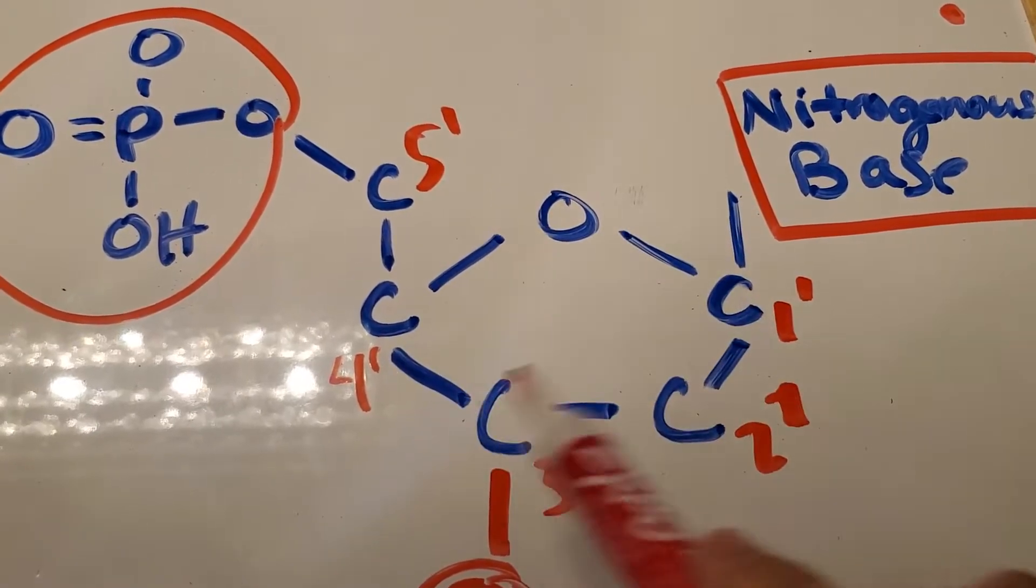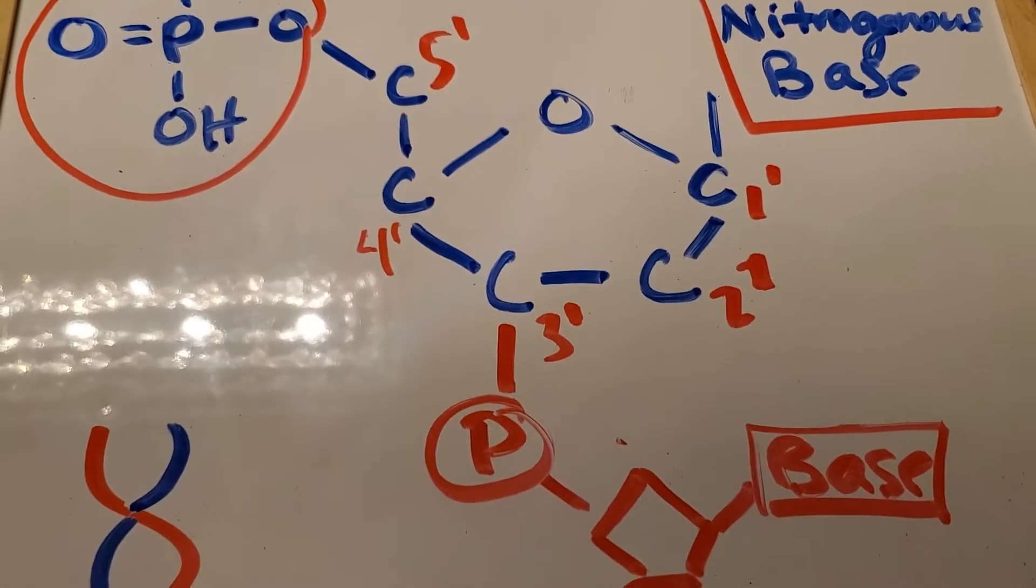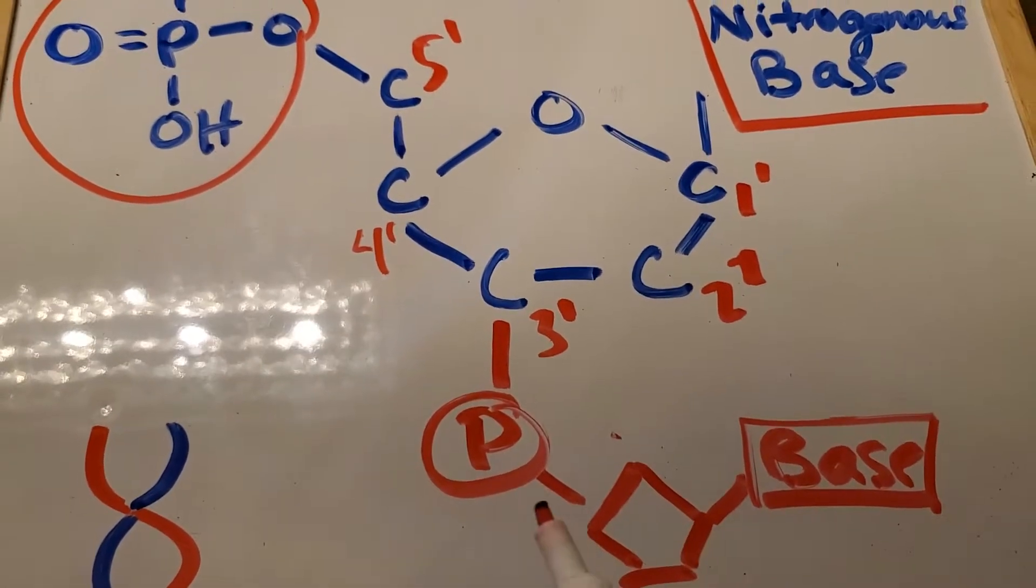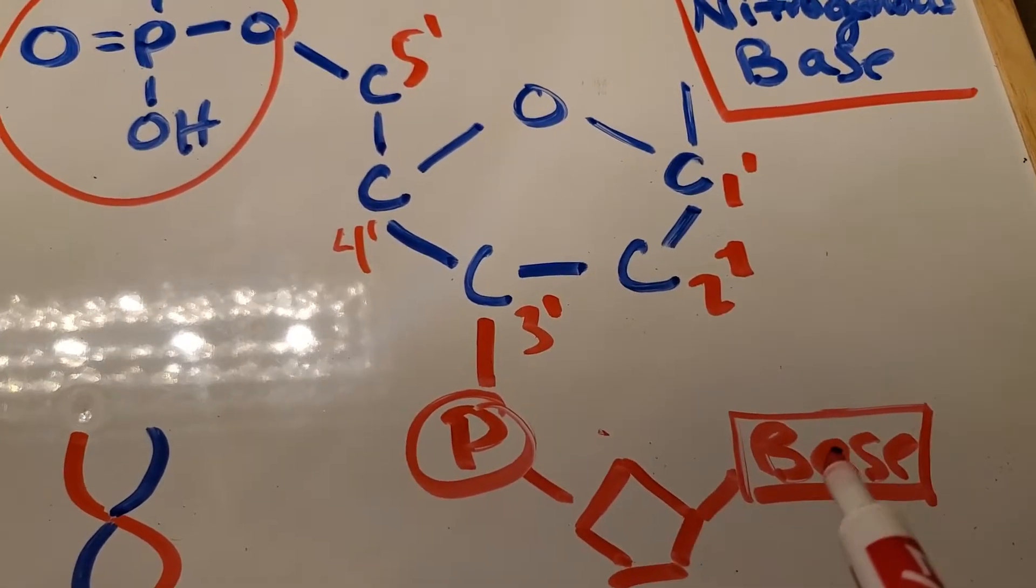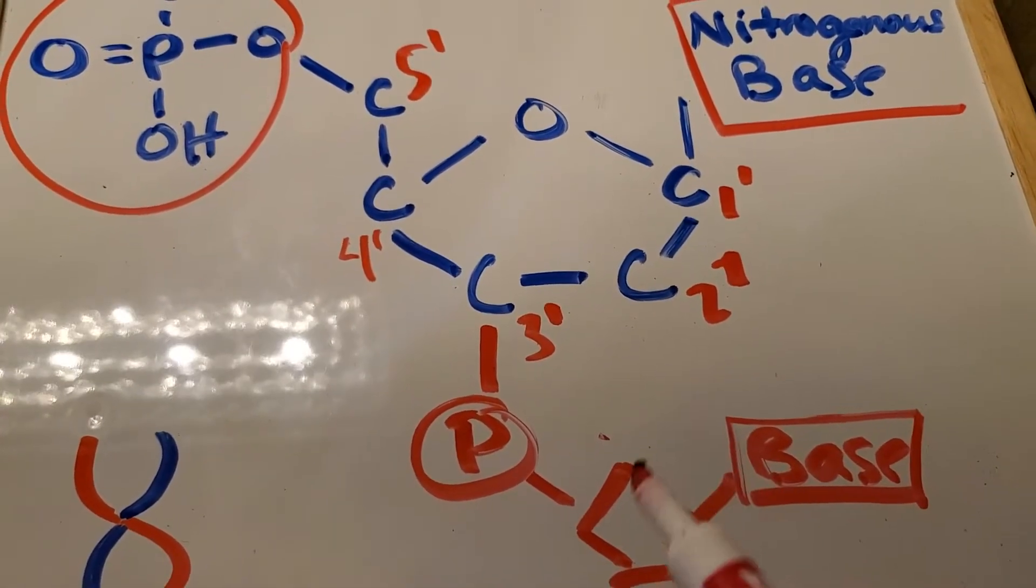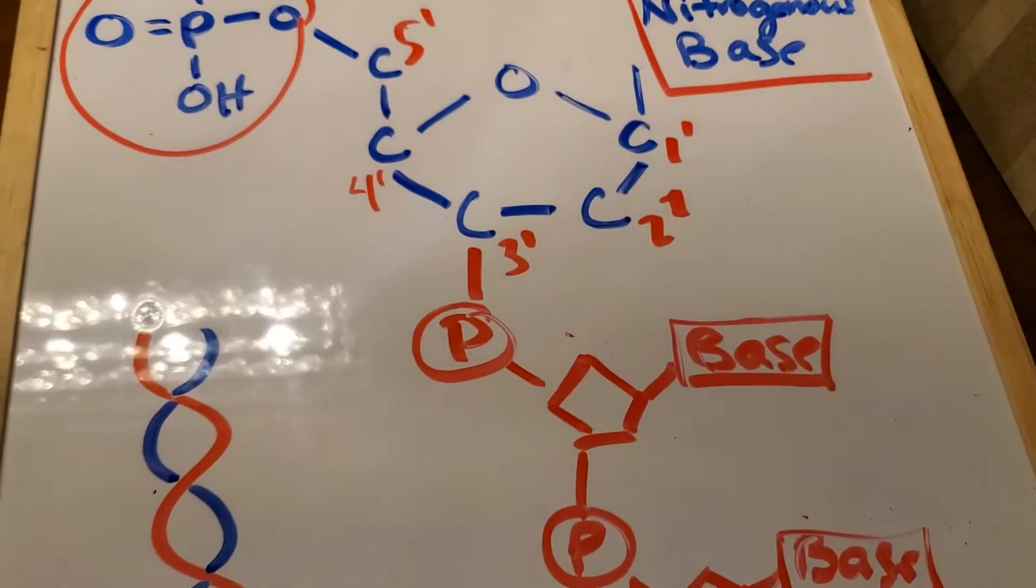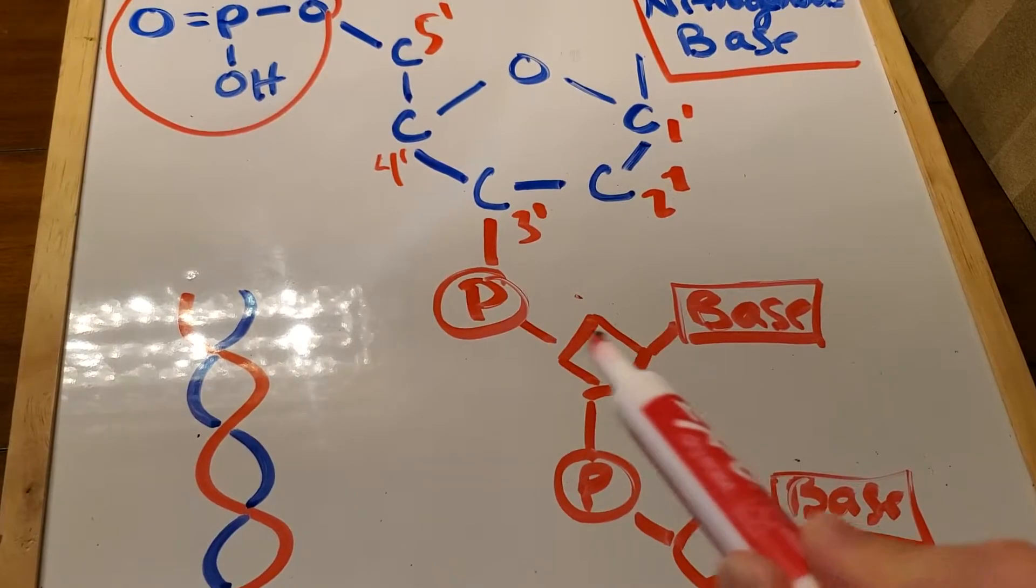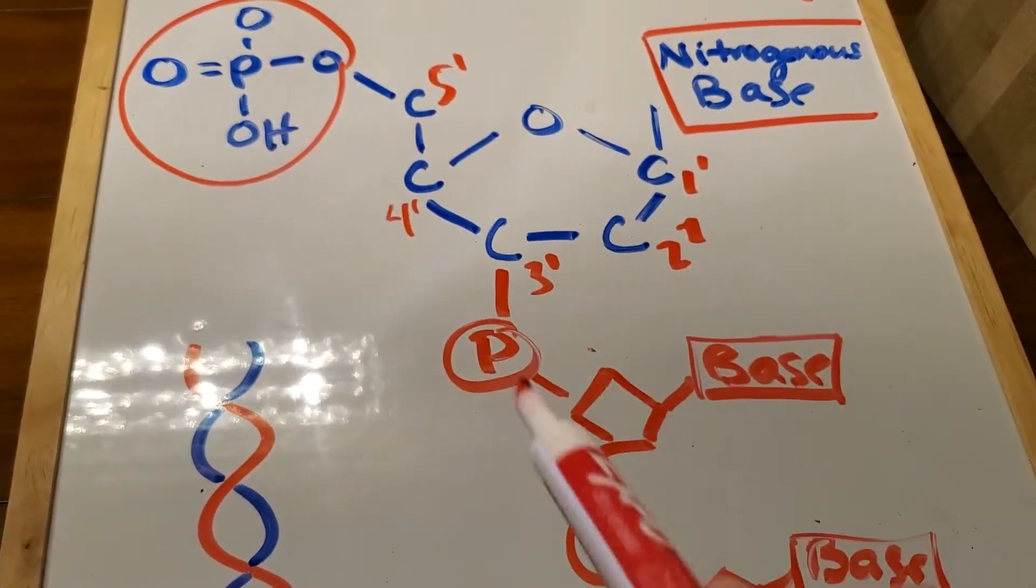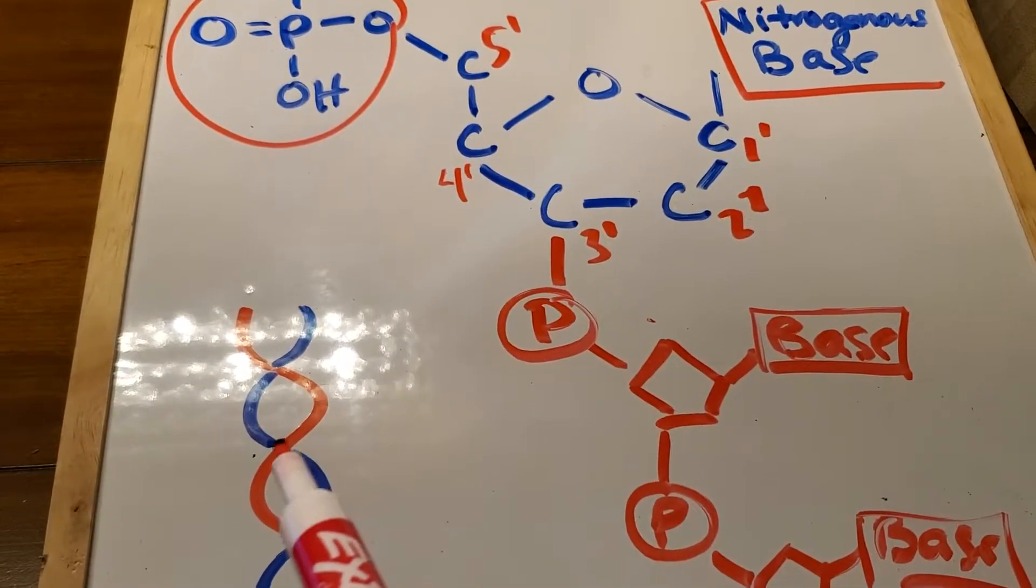So this nucleotide is then going to be attached to another one. Here's a simple version: phosphate, phosphate, and then this is the sugar, sugar, and here's the base, base. It's going to be attached to another one. So it's just the sugar-phosphate backbone. That's going to be this chain right here.